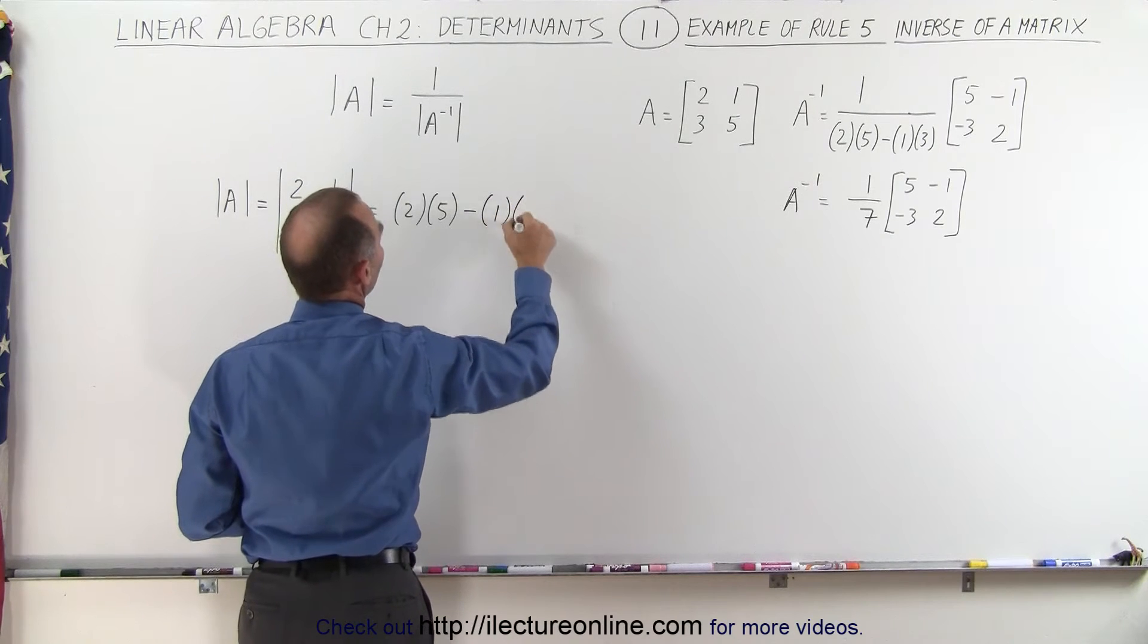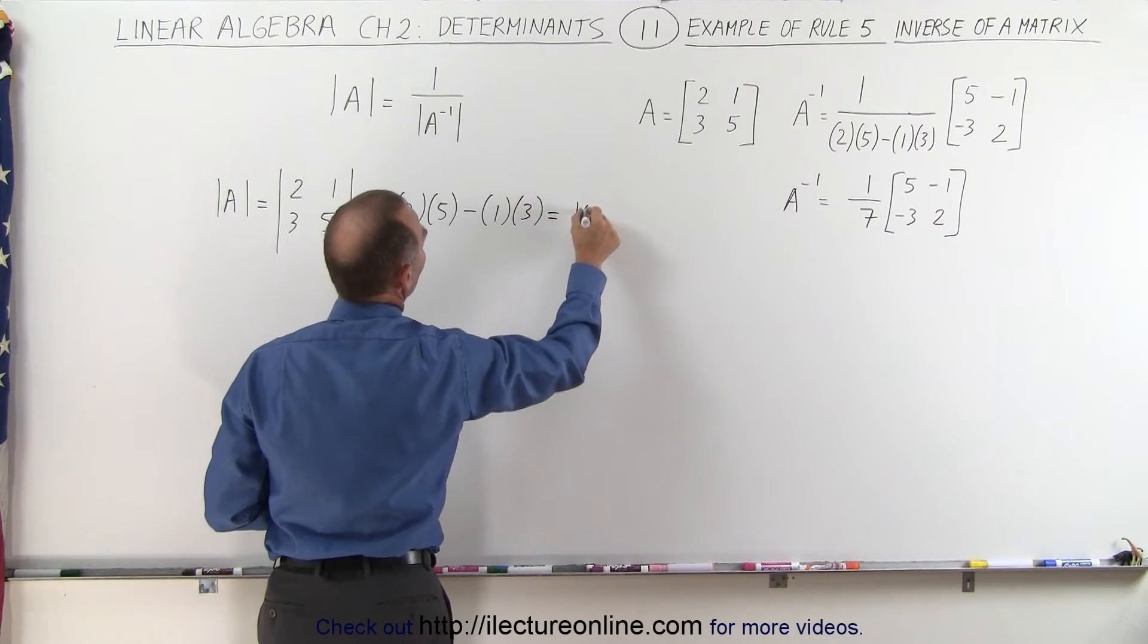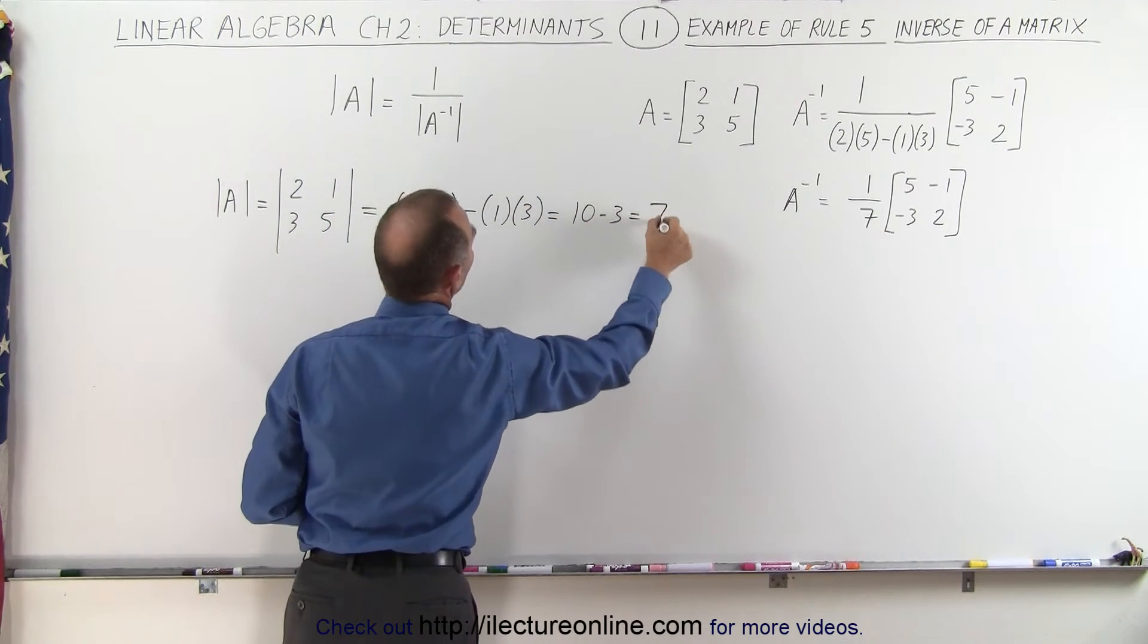This gives us 10 minus 3 which is equal to 7.